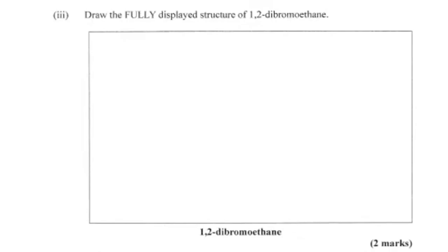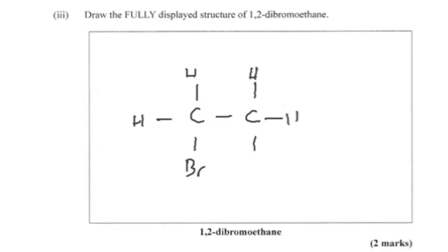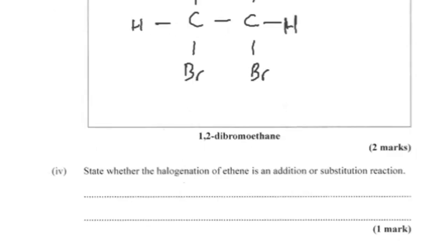Part three: draw the fully displayed structure of 1,2-dibromoethane. After we've added those two bromine atoms, we should now have a saturated compound. As long as we have a bromine on each of those carbon atoms, we're fine. Part four asks whether the halogenation of ethene is an addition or a substitution reaction — it's an addition reaction, and that should give us the marks.